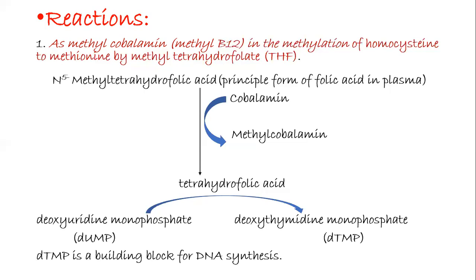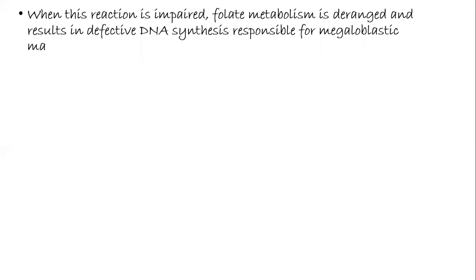DTMP is a building block for DNA synthesis. This methylcobalamin is responsible for conversion of homocysteine to methionine. So the fundamental cause of DNA impaired synthesis is in vitamin B12 deficiency because there is decreased availability of tetrahydrofolate. Most of the cobalamin is trapped as N-methyl tetrahydrofolate. So if there is no tetrahydrofolate, then there cannot occur conversion of DUMP to DTMP. And in this way, it leads to impaired DNA synthesis. So when this reaction is impaired, folate metabolism is deranged and results in defective DNA synthesis, resulting in megaloblastic anemia.